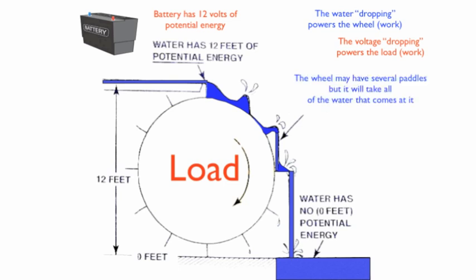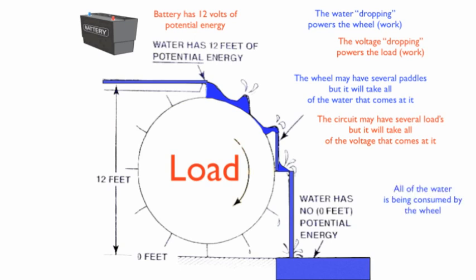The water wheel may have several paddles, but it will take all of the water that comes to it. The circuit may have several loads but it will take all of the voltage that comes at it. All of the water is consumed by the wheel and all of the voltage is consumed by the load.